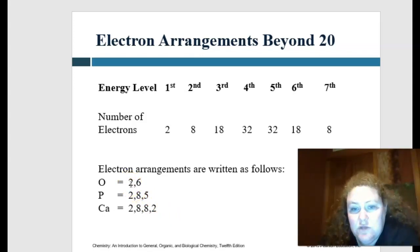So the first orbital only has a max of two, so that would be why it would be two, comma, six for oxygen, because we'd only have six filling the second orbital.